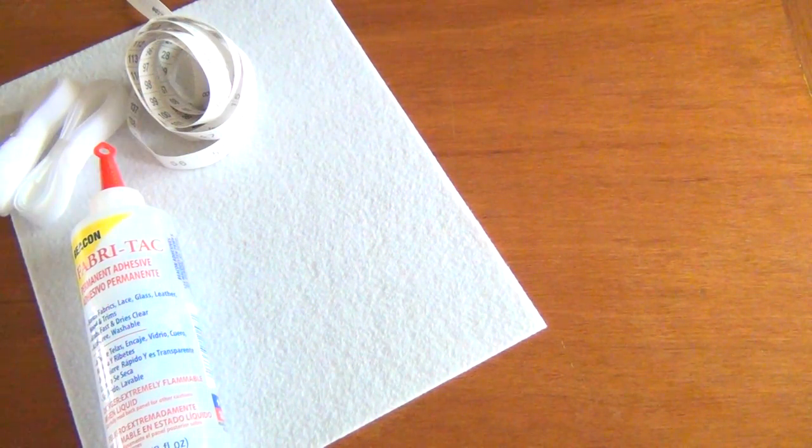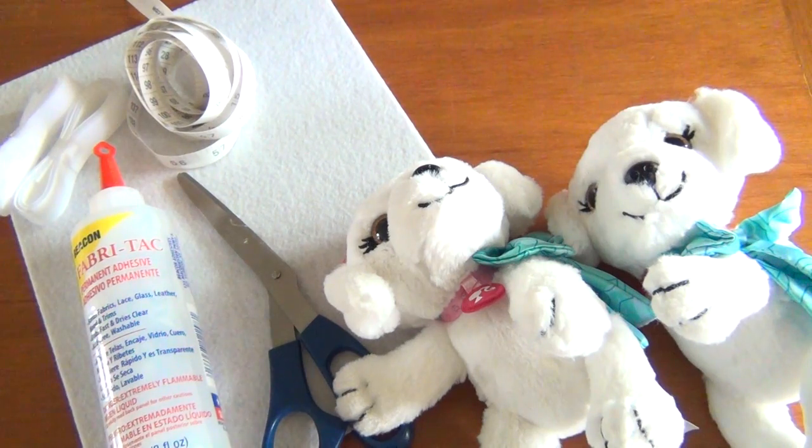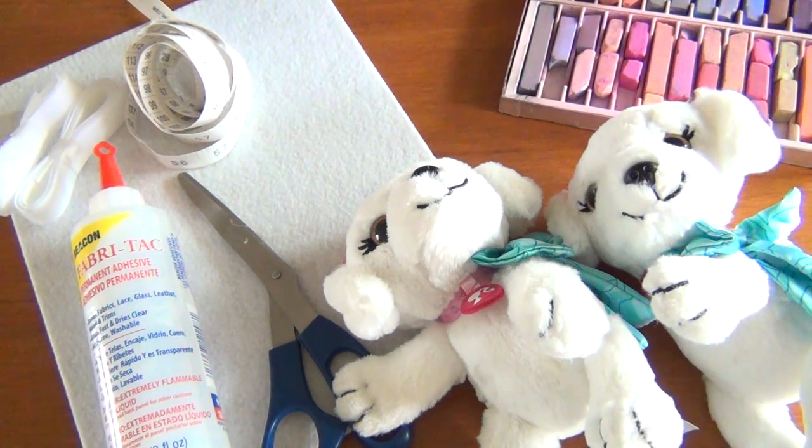For the first costume you'll need some stiff white felt, Fabri-Tac glue, measuring tape, velcro, scissors, stuffed dogs, and optionally chalk pastels and hairspray.